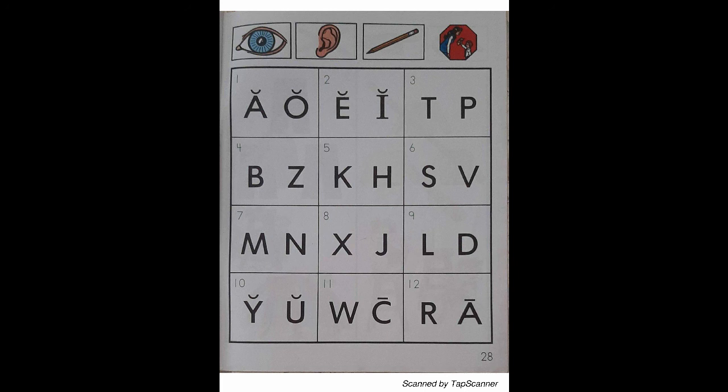Look at the letter in box 8. Listen as I say the sound of the letter: "X" — Ox — "X". With your pencil, circle the letter that reads "X".